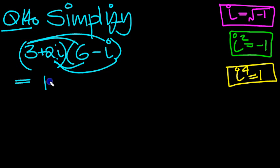The first line, 3 times 6 is 18. Second line, 3 times minus i is minus 3i. The third line, 2i times 6 is 12i.